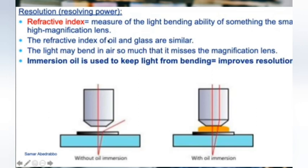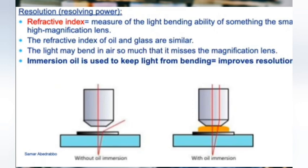The refractive index of oil and glass are similar. At the 100x objective lens we always use oil immersion. When you get to that objective lens in lab, you put a little drop of oil on the slide. The drop of oil merges between the slide and the objective lens, so it stops the light from bouncing off and you get a very clear image.